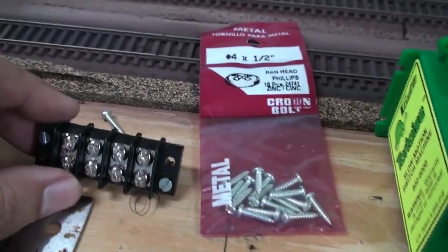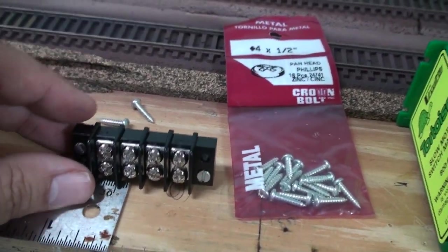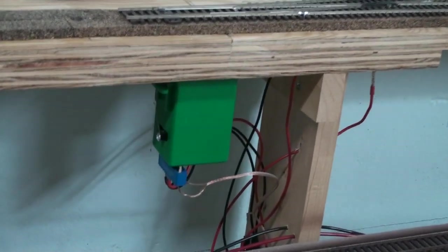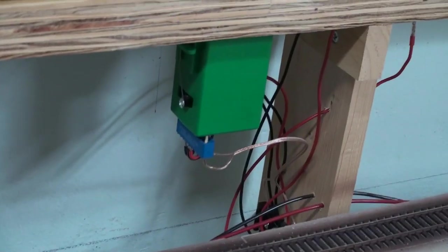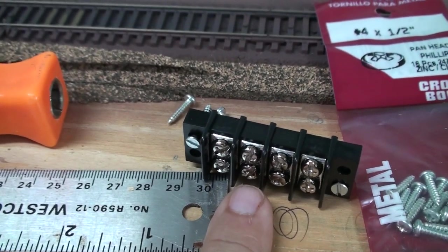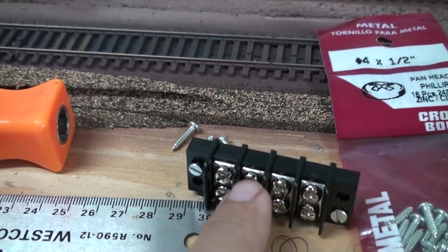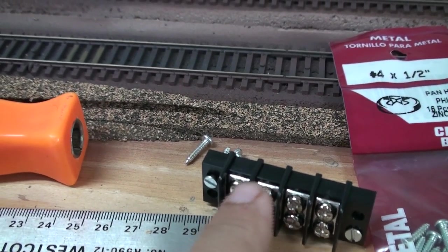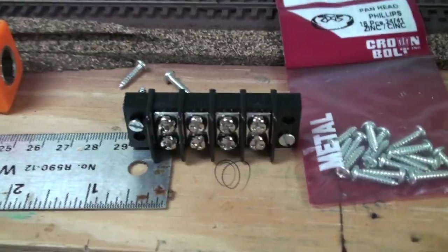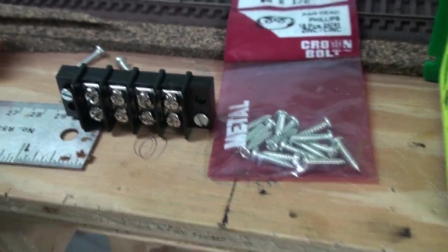I like to mount a terminal strip near the switch machine. By doing so, I can mount or dismount the switch machine simply by disconnecting the wires from one-half of the terminal strip and then the layout wires would be connected to the other half of the terminal strip. In other words, creating a breaking point for maintenance or whatever you may have to do.